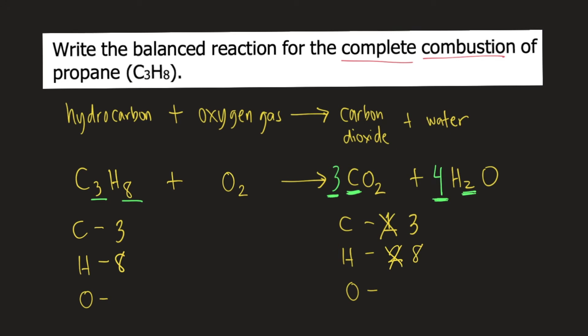Lastly, let's balance oxygen. There are two oxygens on the left side. And on the right side, we have 3 times 2, that's 6, plus 4 times 1, that's 4. A total of 10 oxygens on the right side. So how do we balance?